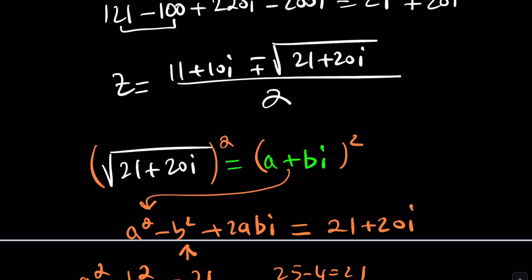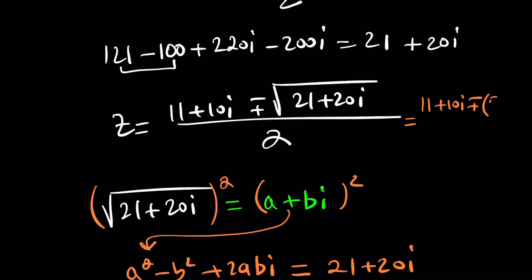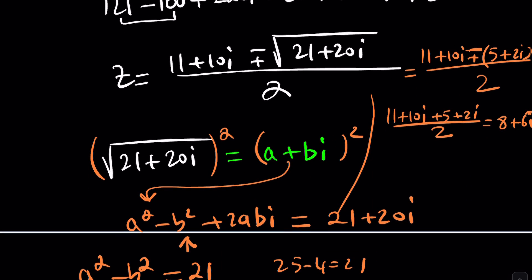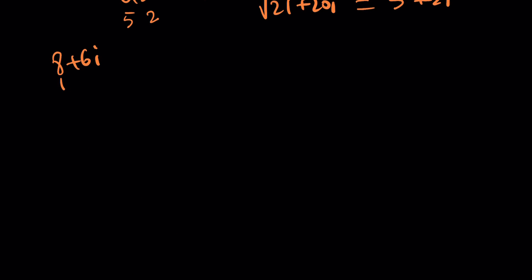Once you plug this in here, you're going to get 11 plus 10i plus minus 5 plus 2i. And by the way, this is one of the square roots. There's another one which is the opposite, but we're taking care of that by using the plus minus sign. One of the roots will be 11 plus 10i plus 5 plus 2i divided by 2. That is 16 plus 12i divided by 2, which is 8 plus 6i. And the other one should be 11 plus 10i minus 5 minus 2i divided by 2. That'll be 6 divided by 2, which is 3, and 8i divided by 2, which is 4i. So we have two candidates: 8 plus 6i and 3 plus 4i.